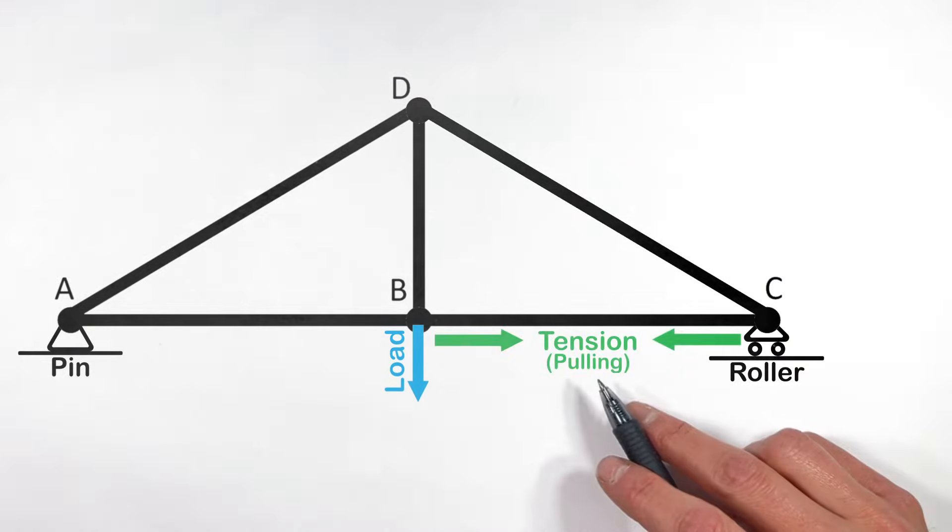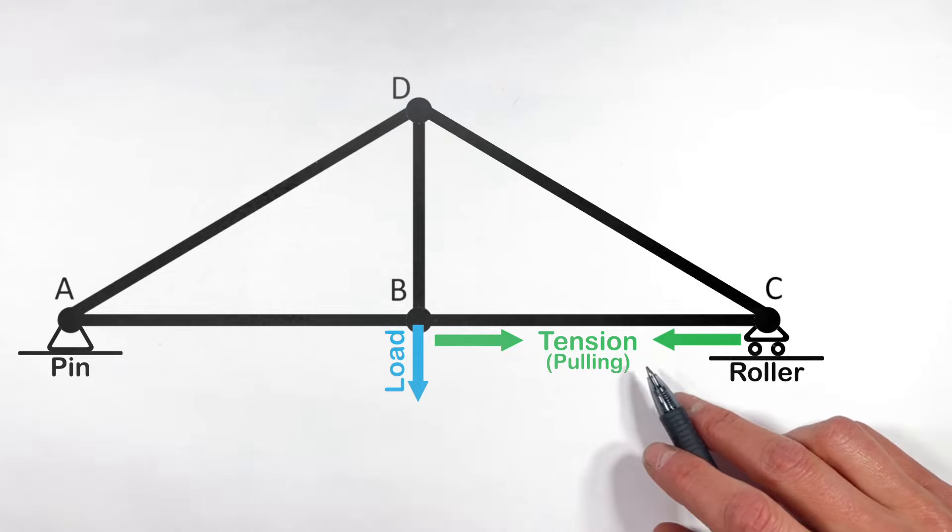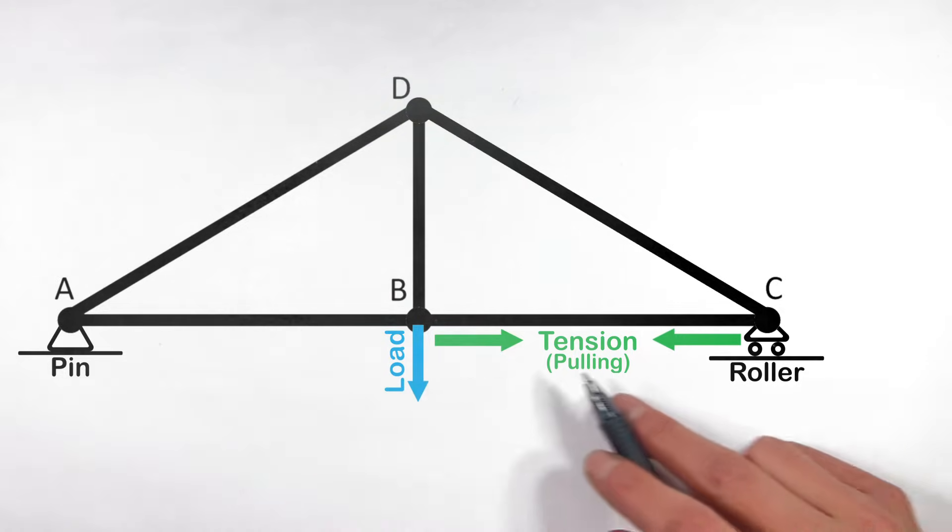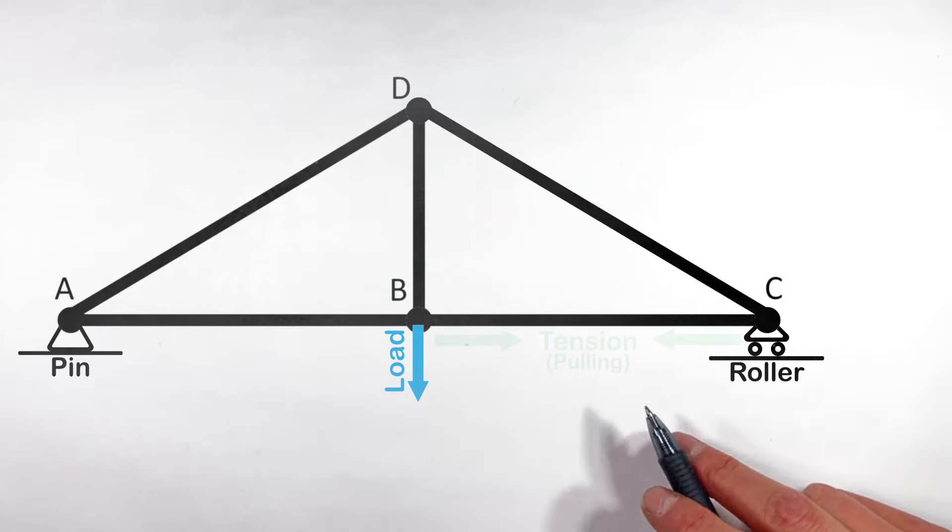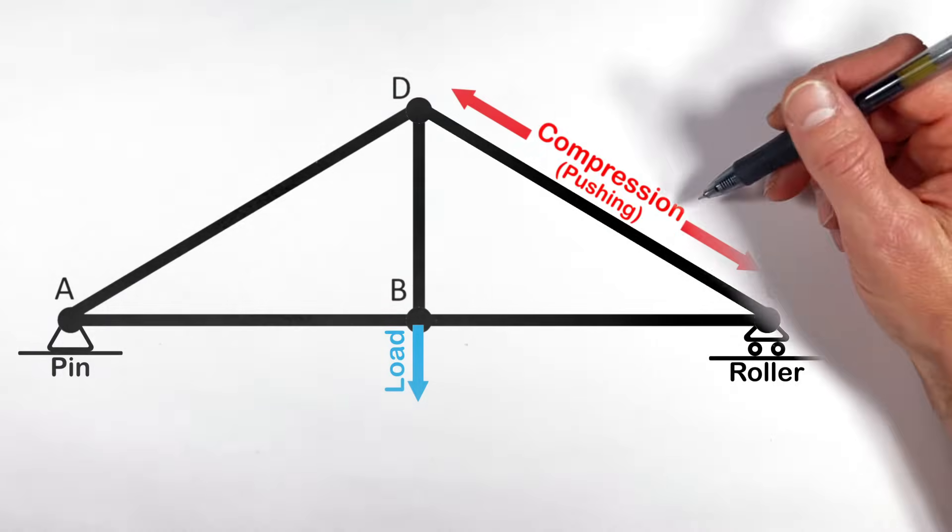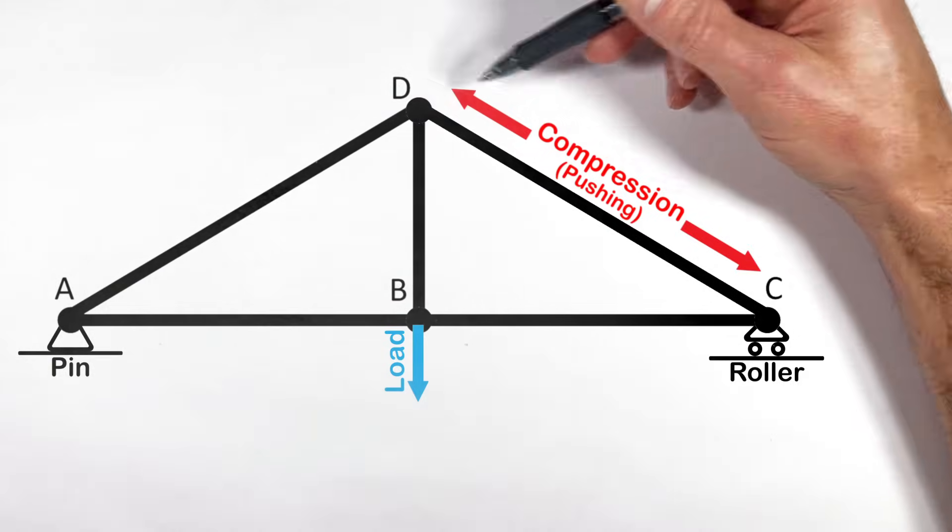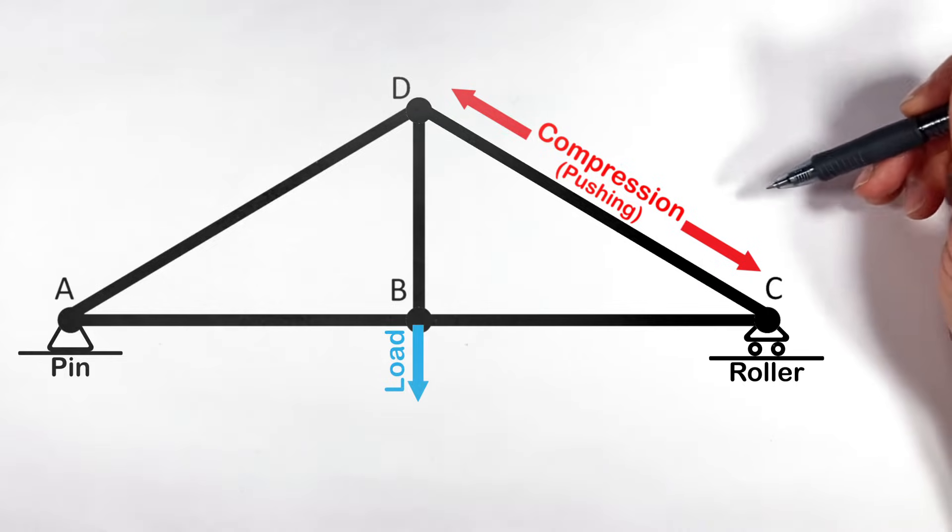You see, whenever a truss member is under tension, that means the beam or member is pulling on the joints at either end of the beam. And when it's under compression, that means the beam is pushing on the joints at either end of the beam.